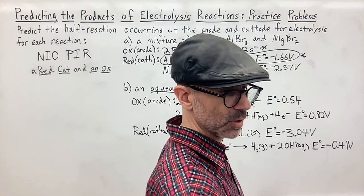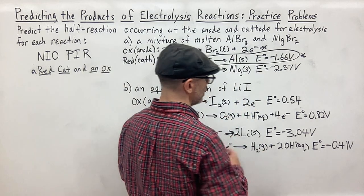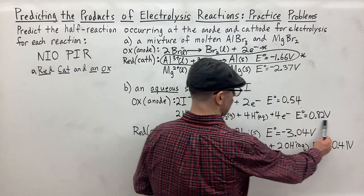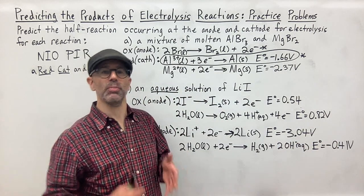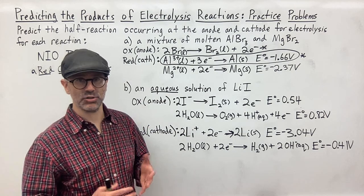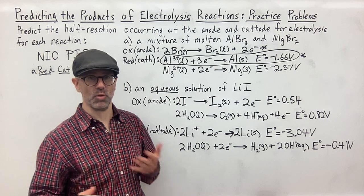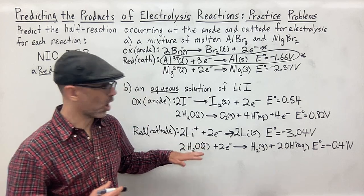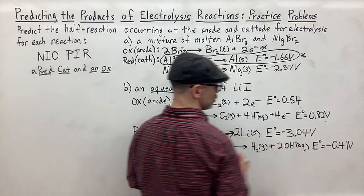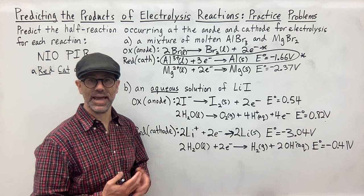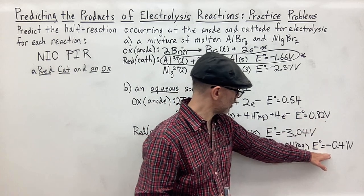Keep in mind that these electrode potentials for the reduction and oxidation of water are not what you would find directly on the standard table, because the standard table is under conditions of one molar. When dissolved in water, the H⁺ concentration is 1×10⁻⁷, so these electrode potential values are based on those conditions.